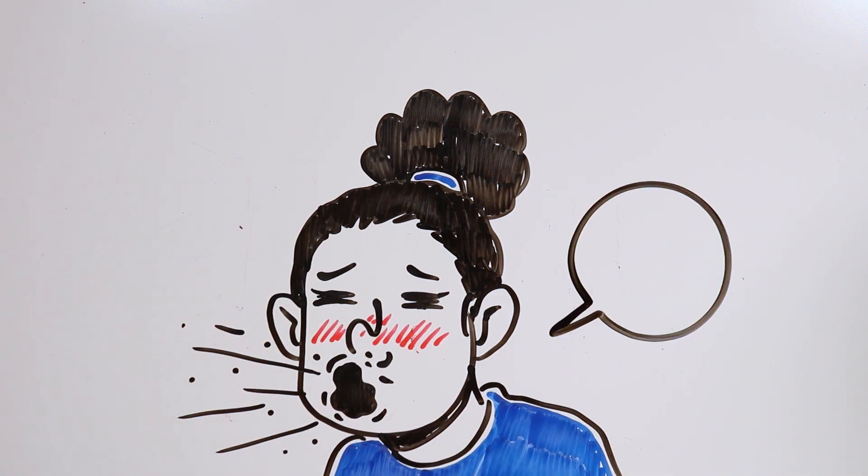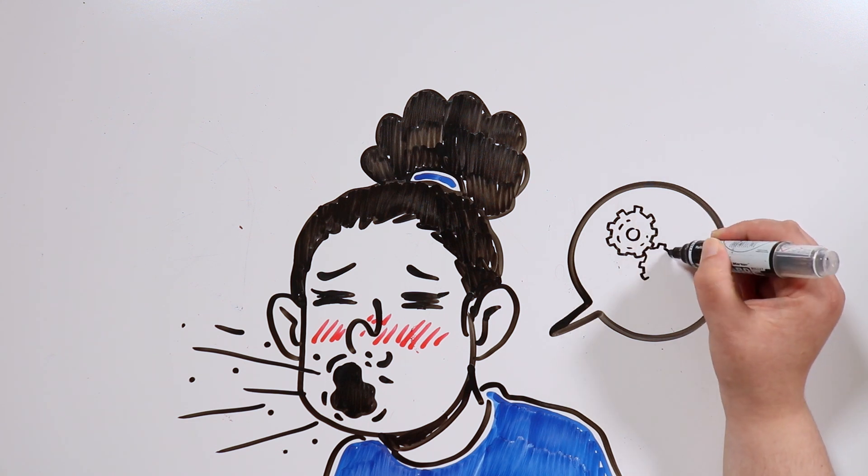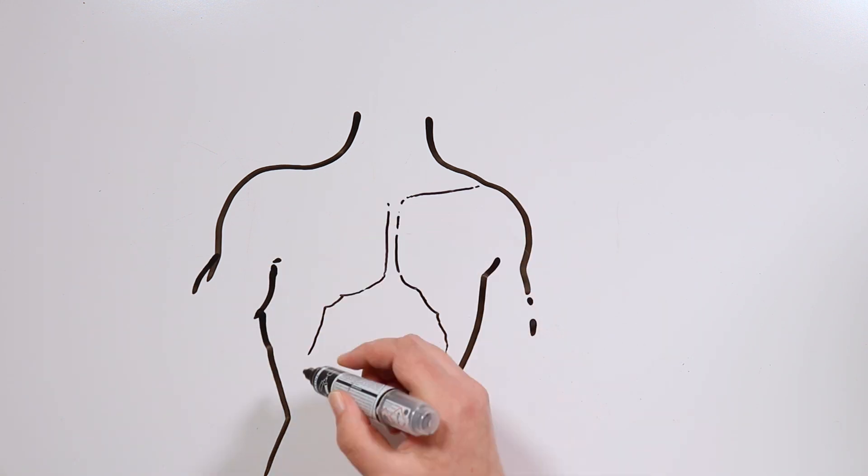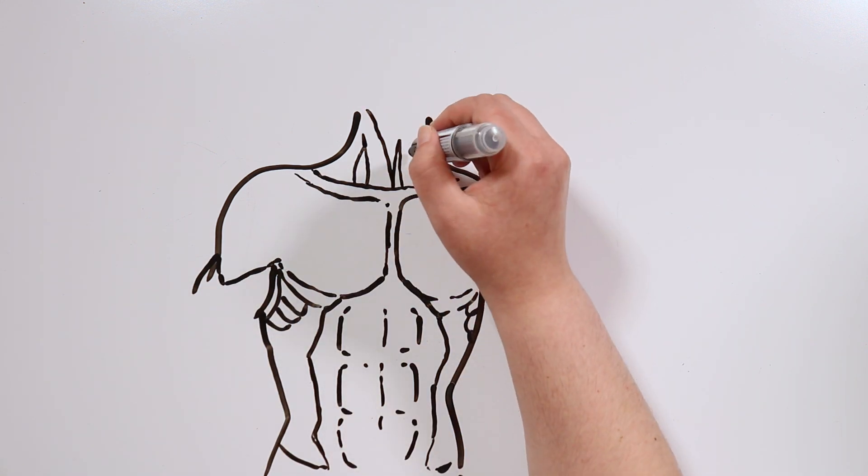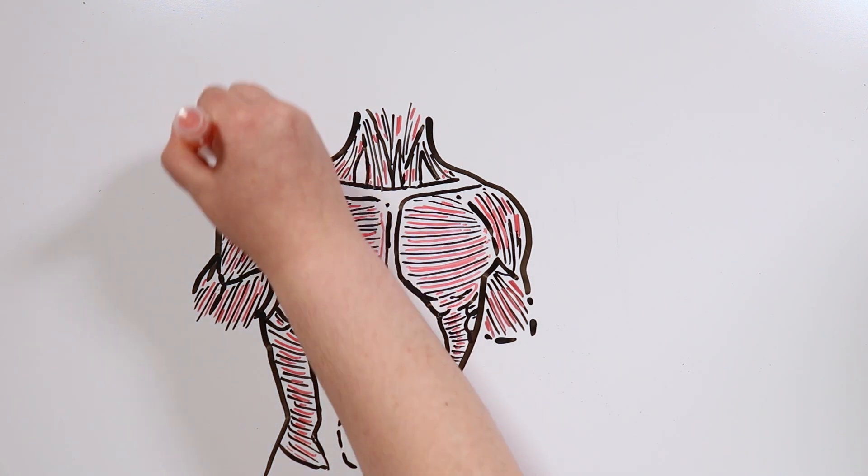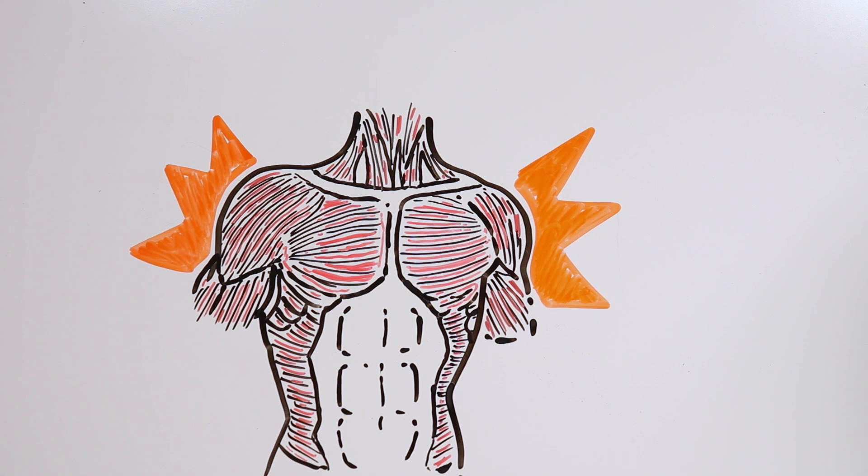Whatever the cause, when we sneeze, many different muscles work in conjunction through that process. The abdominal muscles, the chest muscles, the diaphragm, the throat muscles... they all work together so we can finally shoot outside the air we need to expel.